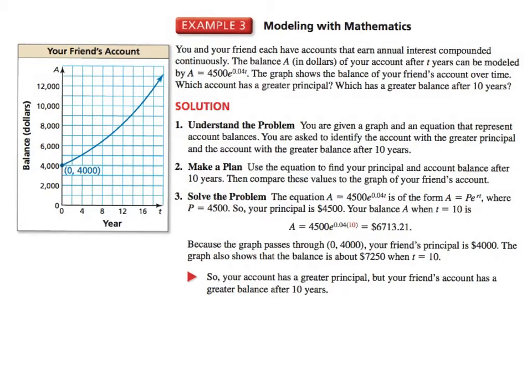So I'm just going to put this example here for you. You and your friend each have accounts that earn annual interest compounded continuously. The balance A in dollars of your account is modeled by this function. The graph shows the balance of your friend's account over time. Which account has the greater principal? Which has the greatest balance after 10 years?